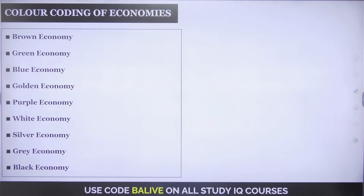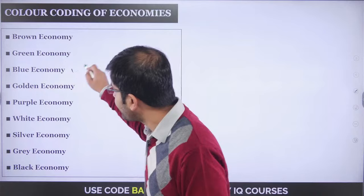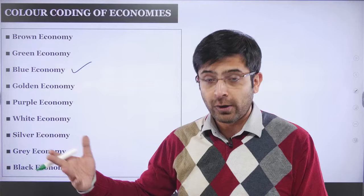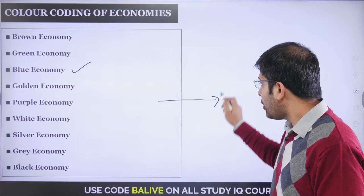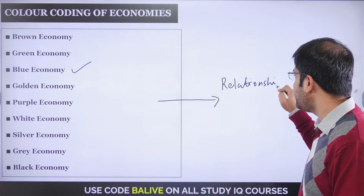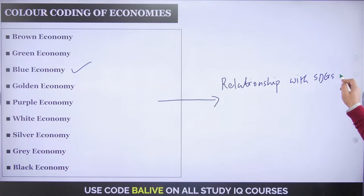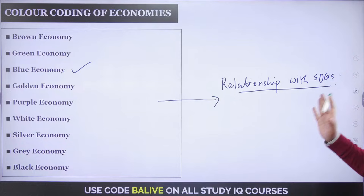Today we have nine color-coded economy types: brown, green, blue, golden, purple, white, silver, grey, and black. Most of you may only be aware of the blue economy, since India has taken substantial steps toward becoming one. But you should have a fair idea of all of them, and more importantly, understand the relationship each shares with the implementation of sustainable developmental goals.